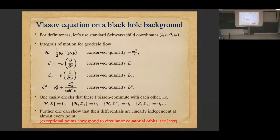You can show that all four quantities Poisson commute with each other. For example, the Poisson bracket of H with ε is zero, which means E is conserved along the flow of H. You can also check that E and L_z Poisson commute with each other. You can also show that the differentials of these quantities are linearly independent almost at every point. There are exceptional points corresponding to circular or equatorial orbits — we'll see later why that happens.